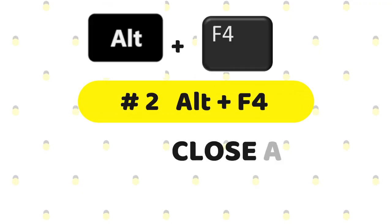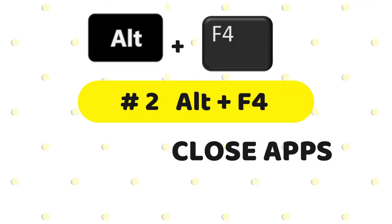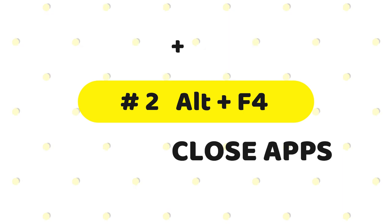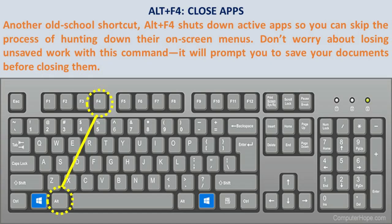Alt plus F4 — close apps. Another old school shortcut, Alt plus F4 shuts down active apps so you can skip the process of hunting down their on-screen menus. Don't worry about losing unsaved work with this command — it will prompt you to save your documents before closing them.